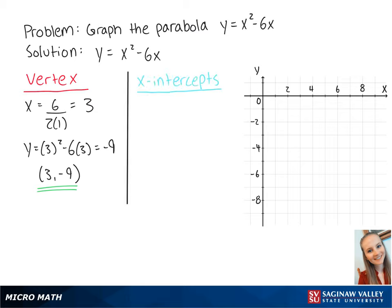Now we want to find the x-intercepts. We find that when y is equal to 0, so we set our equation x squared minus 6x equals 0.